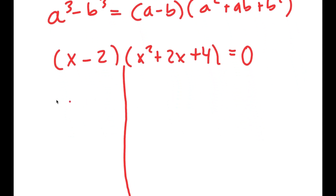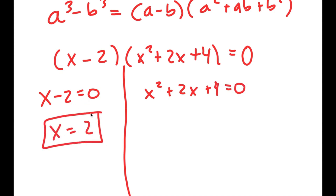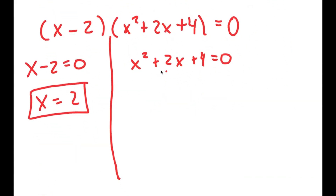So now I get two equations: x minus 2 equals 0, and x squared plus 2x plus 4 equals 0. For x minus 2 equals 0, I get x equals 2, which was the solution we already found. But now we also have a quadratic equation which gives us two more solutions, so I'm going to use the quadratic formula.